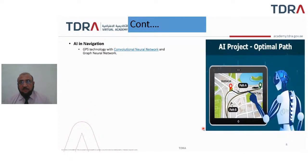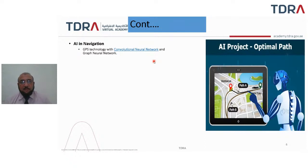There are other applications of AI as well. For example, finding the optimal path using GPS and graphs, so a car will find the optimal way towards the destination. Here we see the convolutional neural network, which is used for computer vision — it analyzes pixels and makes decisions based on vision. In AI navigation, GPS technology and convolutional neural networks are used for finding the optimal path.